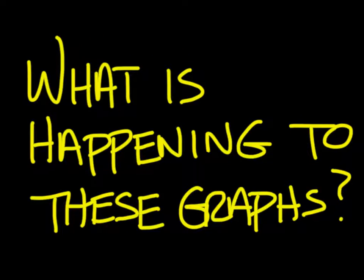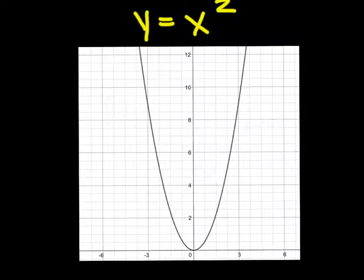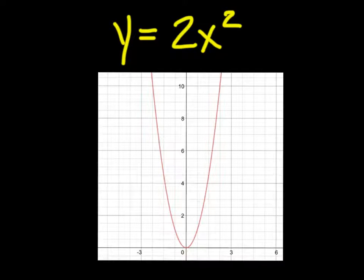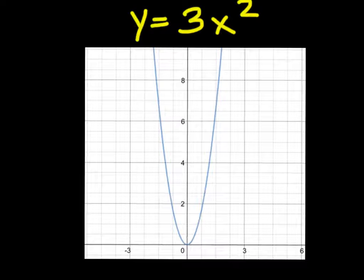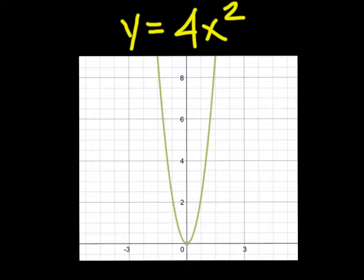Look at these series of quadratic graphs I'm going to put on the screen and see if you can tell what is happening to them. Here is y equals x squared — take a mental photographic picture of that. Now look at y equals 2x squared. What has happened from the first one to the second one? It got more narrow. What about y equals 3x squared? Still going to get narrow. And 4x squared, it's still going inward.